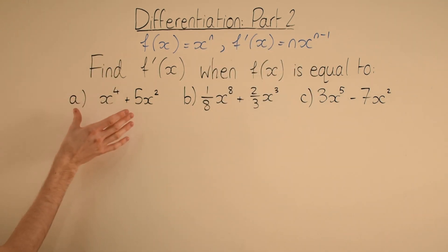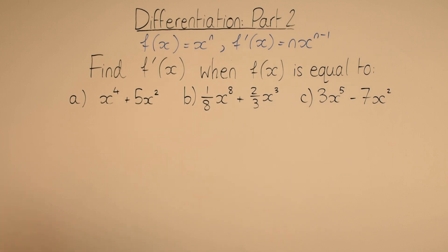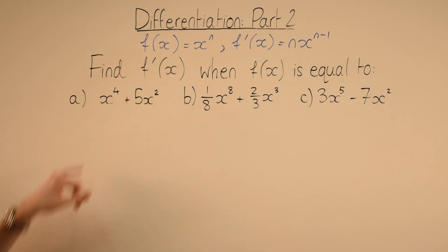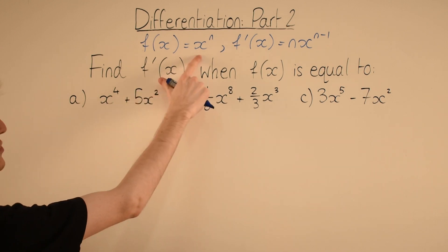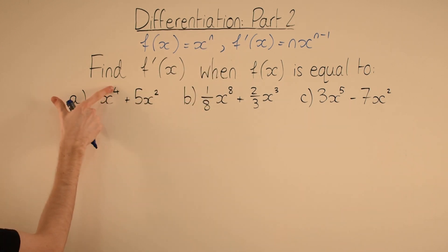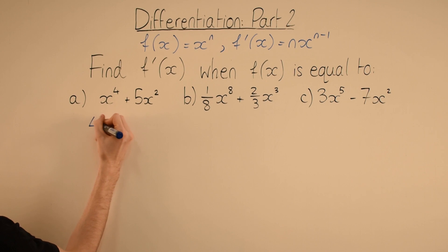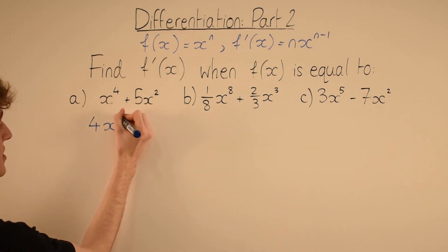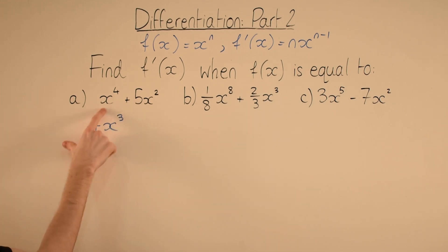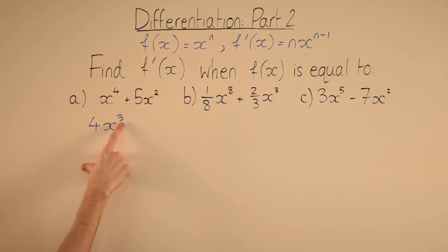We're going to use that rule in this example. We treat the two terms completely separately and add them together at the end. So how do we differentiate x to the power of 4? This is the same as our rule with n equal to 4. We bring the 4 in front to get 4x, and then subtract 1 from the power — 4 minus 1 is 3 — so x to the 4 differentiates to 4x cubed.